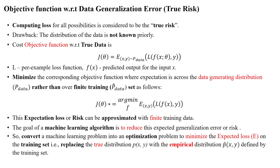Hello everyone, welcome to the data generalization error lecture. The objective function is written with respect to calculating loss for all data available in the true data distribution. The total loss is called the true risk. The drawback of the true data distribution is that the count of the number of samples available in the dataset is unknown prior — that is one of the drawbacks of the true data distribution.